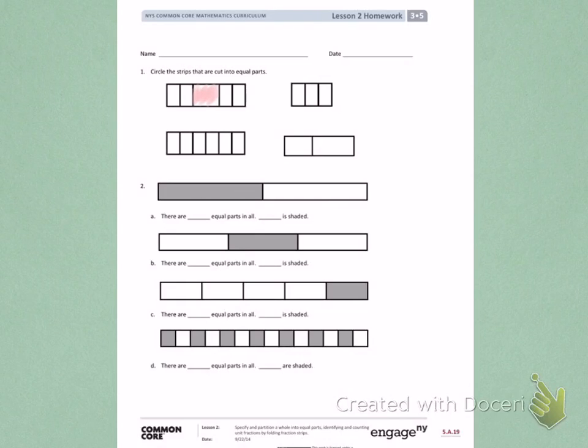The second picture shows 1, 2, 3 equal parts. They all look like they're the same size. So this would be equal parts.